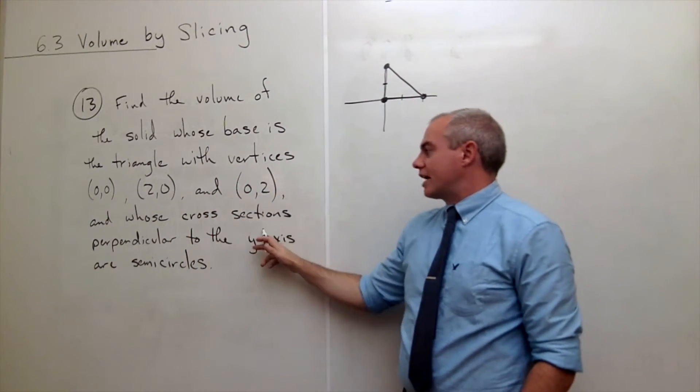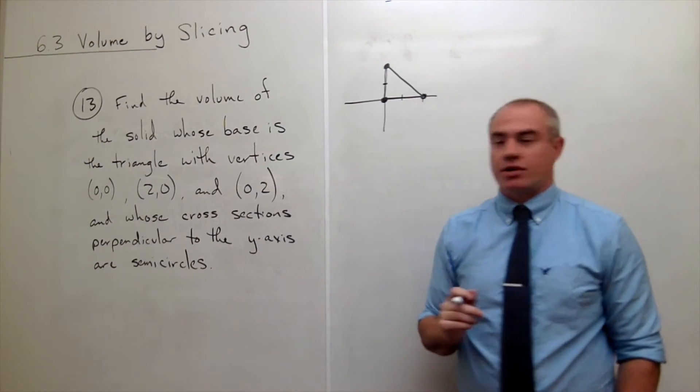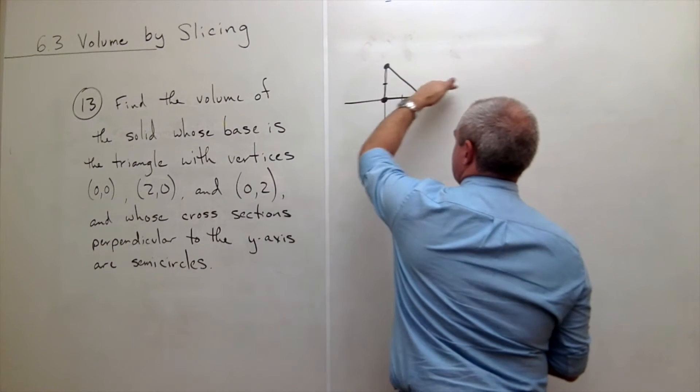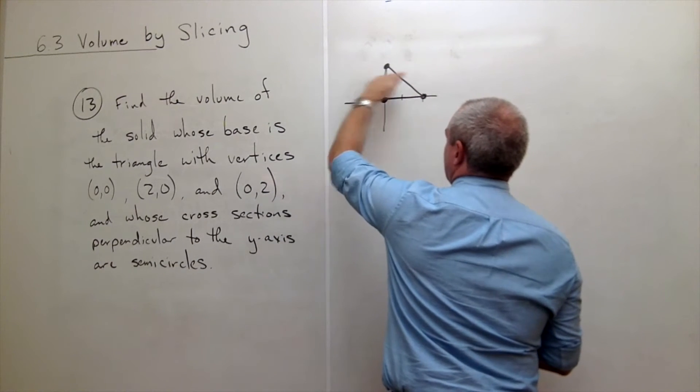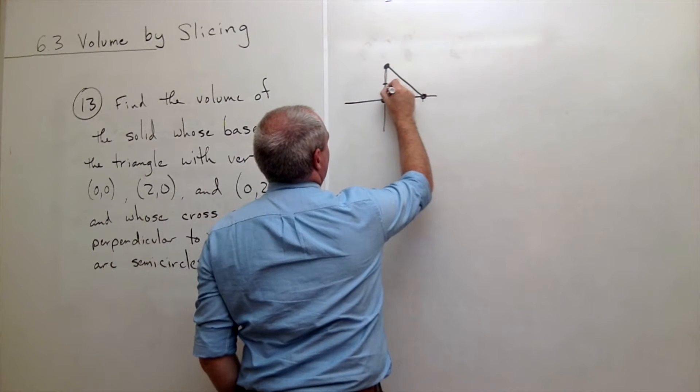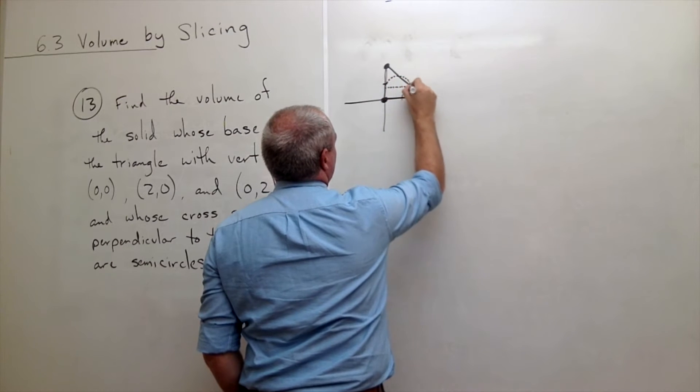Then they say that the cross sections perpendicular to the y-axis are semicircles. In other words, if I made a slice with my knife across this shape that cut the y-axis, then let's say that I made a cut right here, then I would get a semicircle.